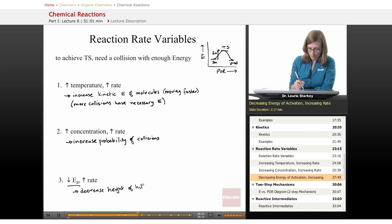So if we could decrease the height of the hill that we have to climb, we could do that by somehow stabilizing, bringing the energy of the transition state down, by stabilizing the transition state. If somehow we could stabilize the transition state, that would be a faster reaction.